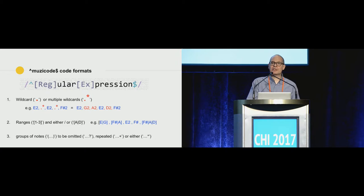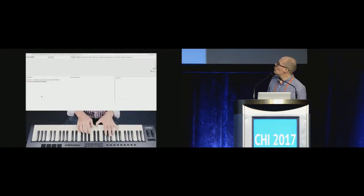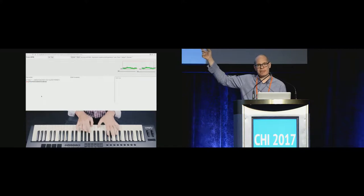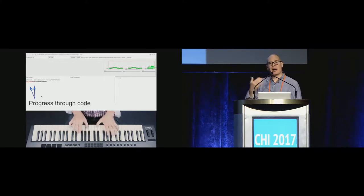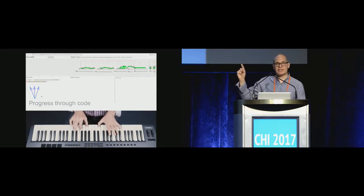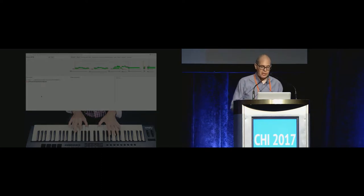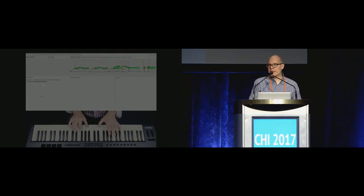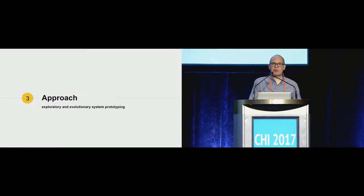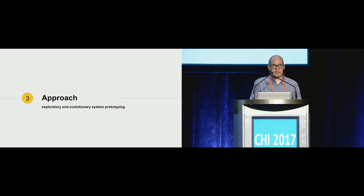Regular expressions also allow for ranges, alternatives, groups and repetitions, and all sorts of different code configurations. In this very simple example, you see the performance view with the incoming note stream on the top. There's one single candidate code on the left-hand side, and as notes are matched they are highlighted in red, giving feedback to the performer. When the code is matched, it triggers a backing track that the keyboard player plays along with. The paper charts an exploratory process of iteratively developing the music codes software in response to emerging requirements from users via a series of workshops.